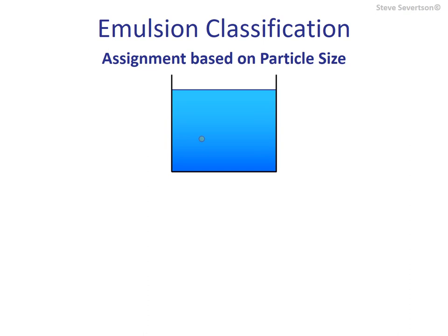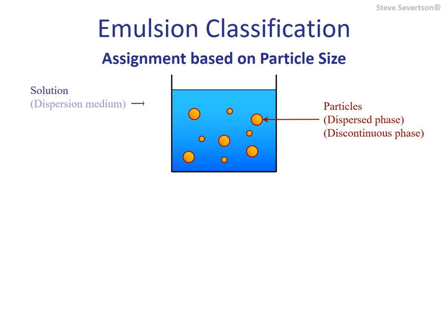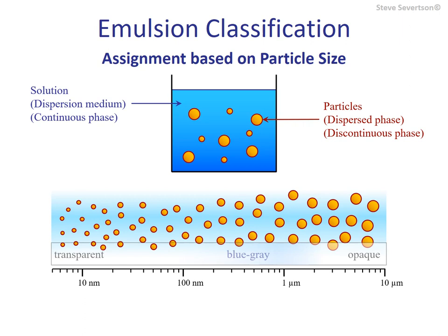Typical emulsions are biphasic systems consisting of liquid particles dispersed throughout a liquid medium. The particle phase is often referred to as the dispersed or discontinuous phase, while the solution phase that surrounds the particles is often called the dispersion medium or continuous phase. The optical appearance of emulsions varies due to differences in particle size, ranging from being optically clear for nanoscale-sized particles to completely opaque for those in the micron-size range.